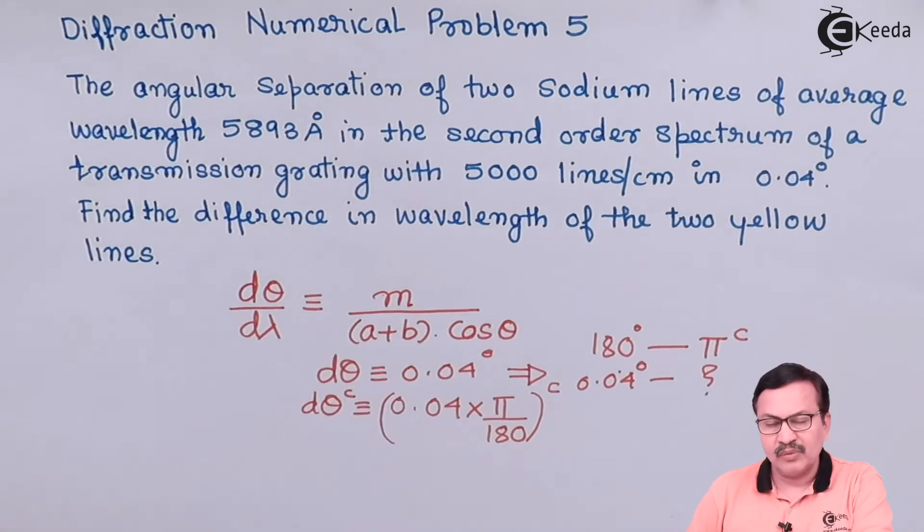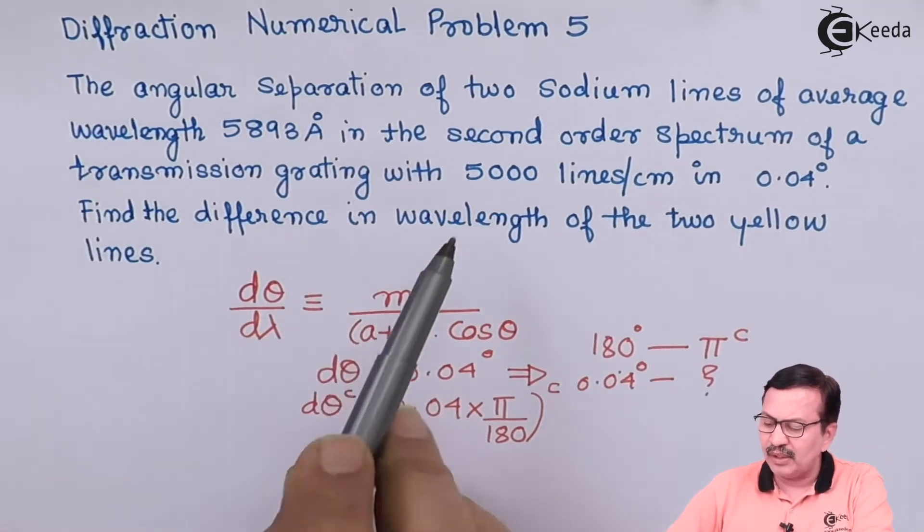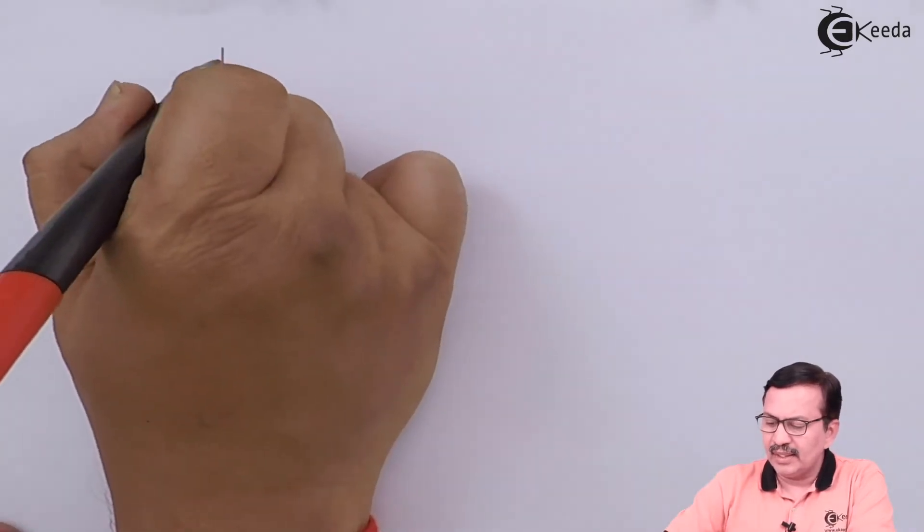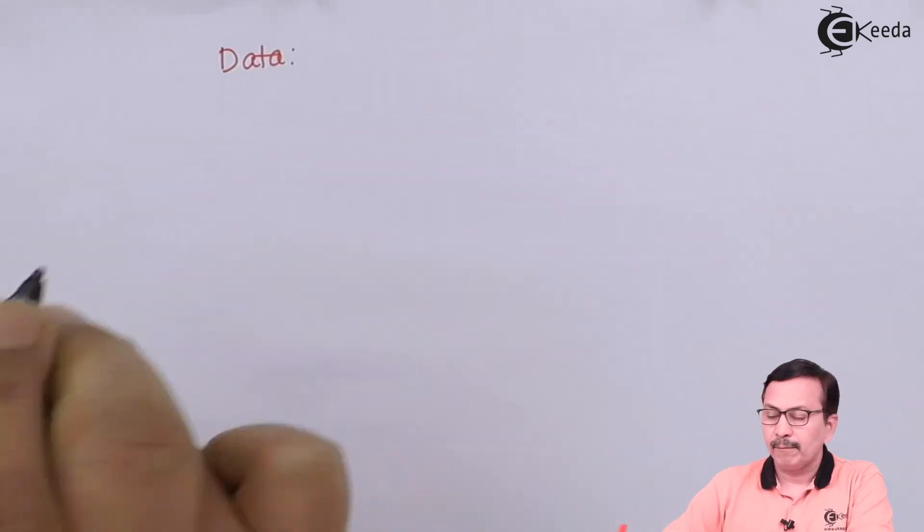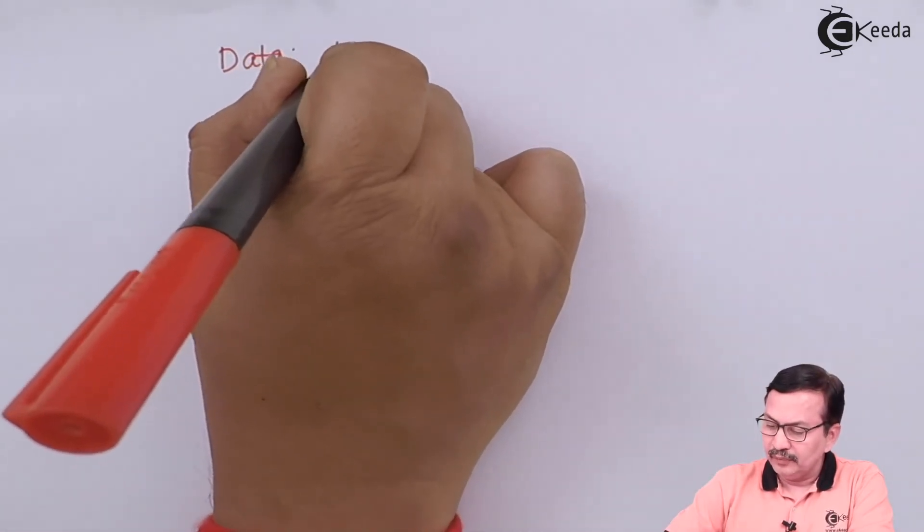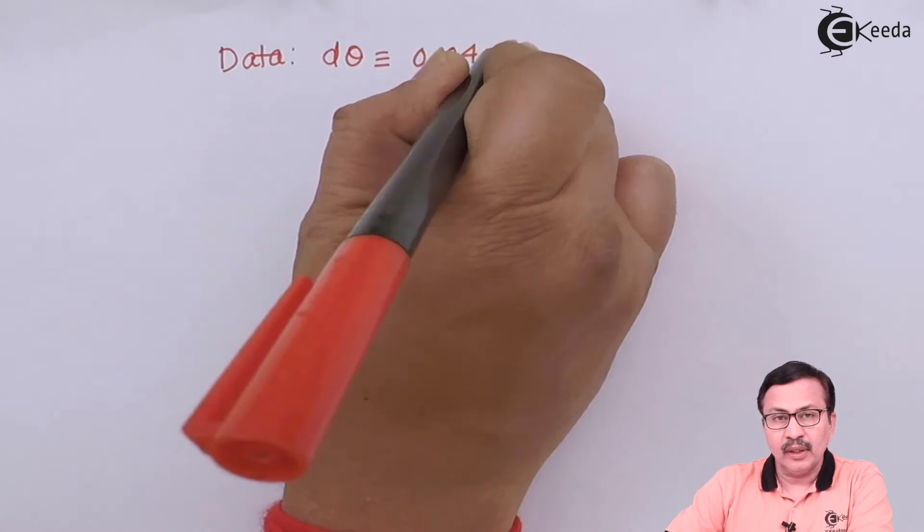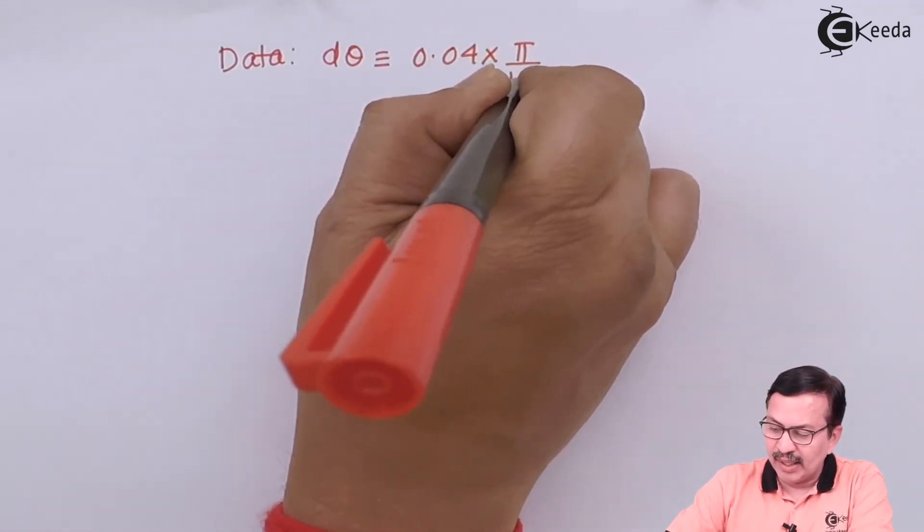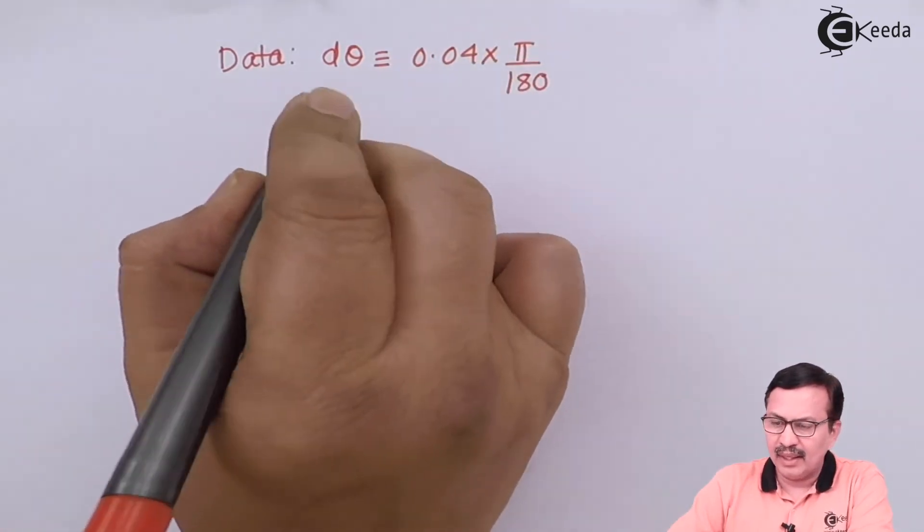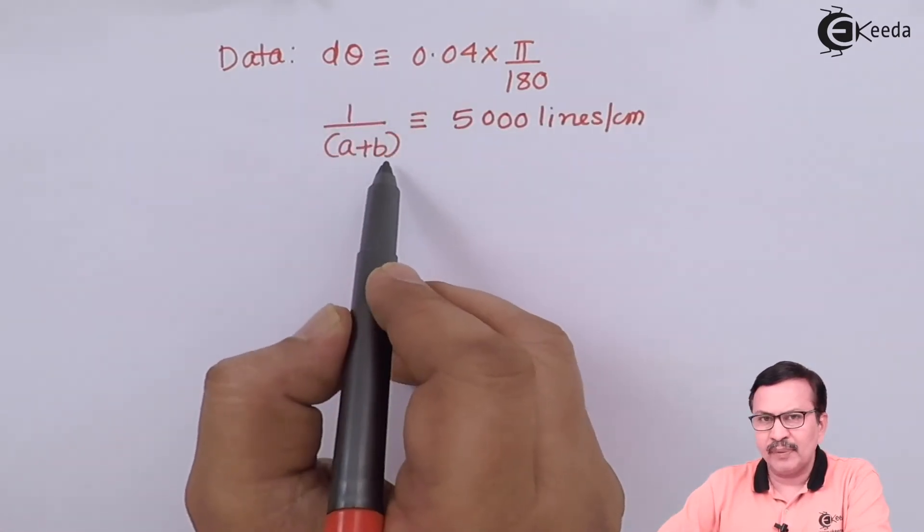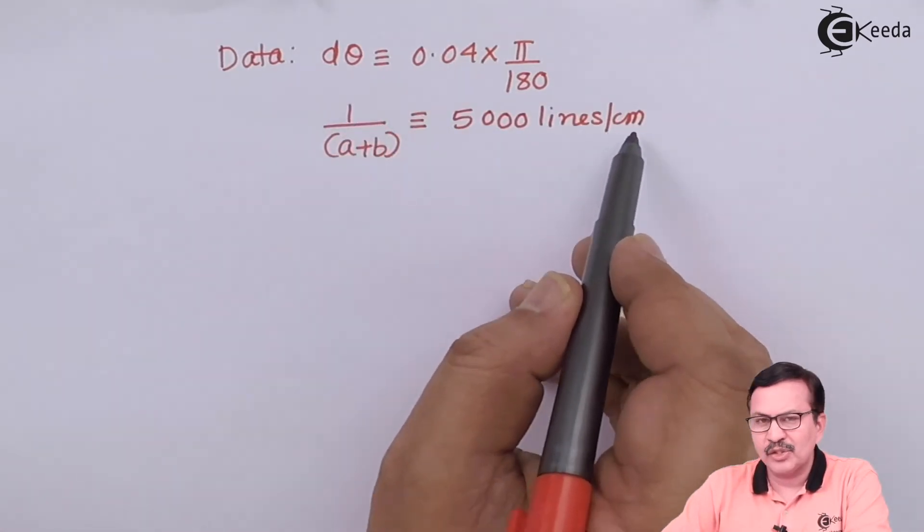We know the order is 2 and we know a+b because 1/(a+b) is equal to 5000. So the data that is available with us is: dθ equals 0.04π/180 radians, dλ we do not know. 1/(a+b) equals 5000 lines per centimeter.